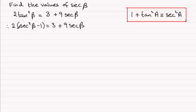Well in order to get sec β, we're going to need to expand this bracket. So we're going to get 2sec²β minus 2 equals 3 plus 9secβ. And I can see that what we've got here is a quadratic equation in sec β. So we need to group relevant terms together, these constants for instance, and make it equal to 0, getting it ready for factorizing.